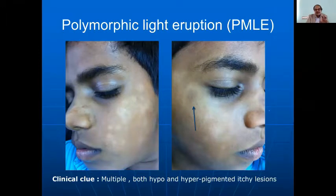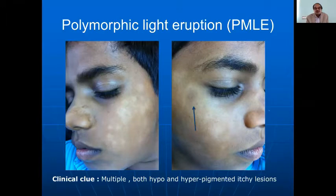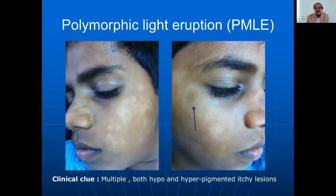An almost similar looking presentation, but here there are multiple lesions. The key difference is that in pityriasis alba only hypopigmentation was present, whereas here both hypo- and hyperpigmented lesions are seen. This eruption over the sun-exposed face is called polymorphic light eruption — it is hypersensitive to ultraviolet rays, so sunscreen must be used.